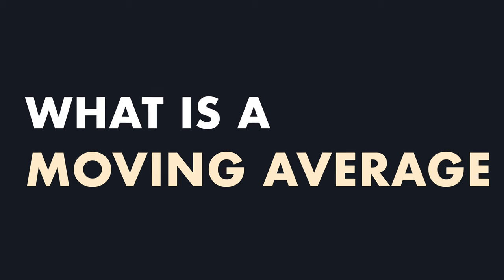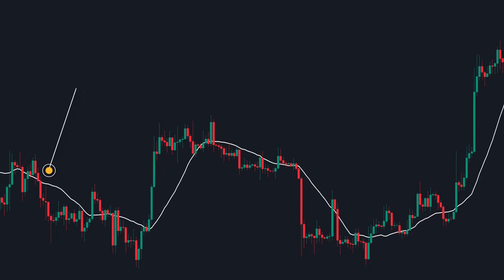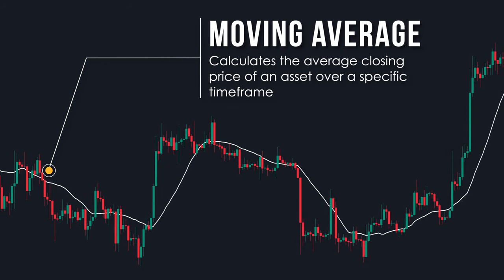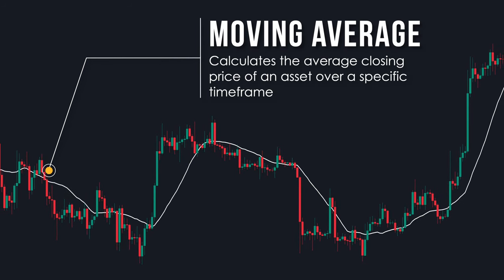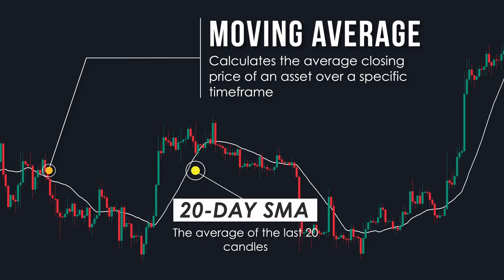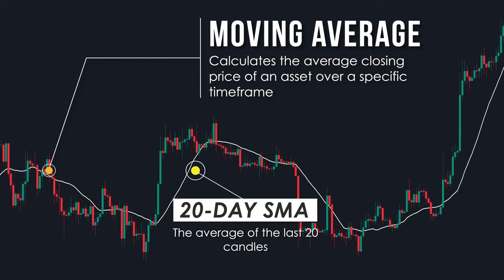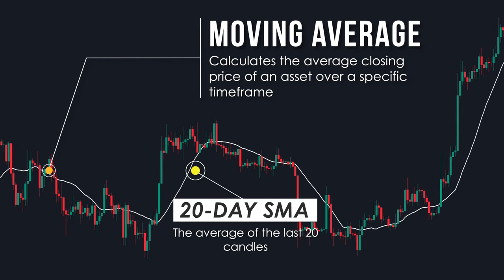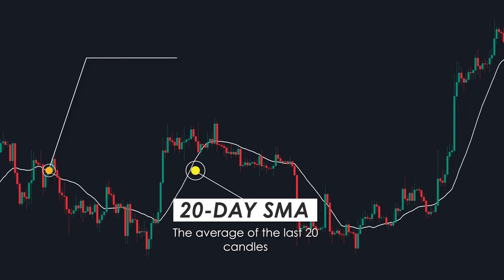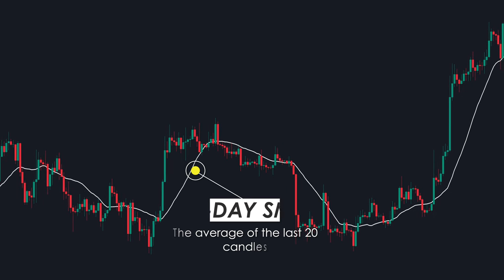What exactly is a moving average? It's a simple yet indispensable tool in the world of trading. It calculates the average closing price of an asset over a specific time frame, such as 20 periods. In other words, it sums up the closing prices of the last 20 candles and divides them by 20. Think of it as a filter for market noise — by smoothing out price fluctuations, a moving average unveils the true trend beneath the surface.